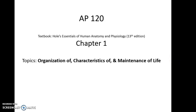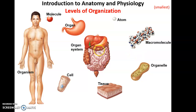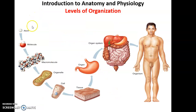AP 120 chapter 1 topics covering organization of, characteristics of, and maintenance of life. When we think about all the different things that can come together to form a living thing, it's quite a hodgepodge of molecules, macromolecules, organisms, organs, and more. We find it's easiest to organize this from smallest to largest, going from atoms — the smallest unit of matter — to molecules, which are multiple atoms bound together, to macromolecules, which have thousands and thousands of atoms bound together.